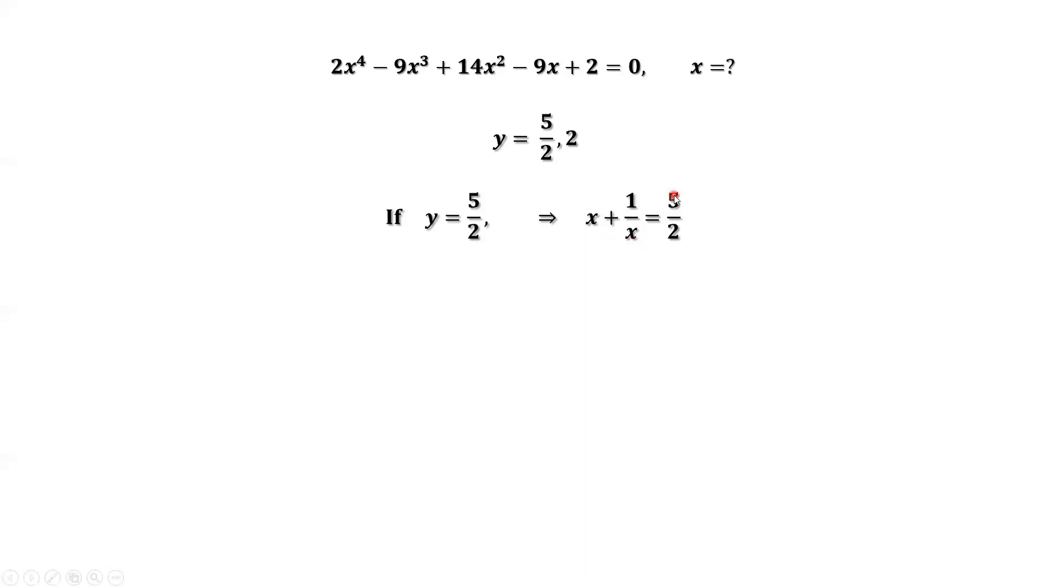Solving this equation, we multiply both sides by x. We have x squared plus 1 equals 5x over 2. Simplifying, we have 2x squared minus 5x plus 2 equals 0.